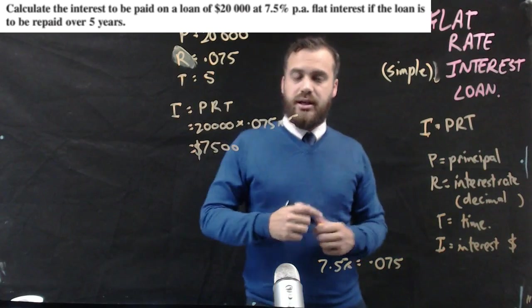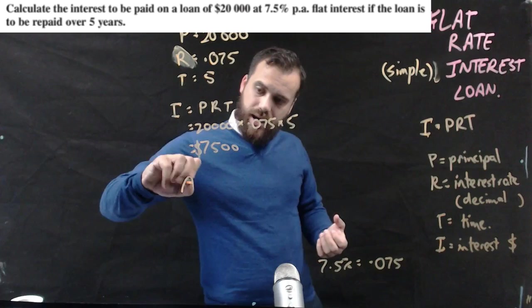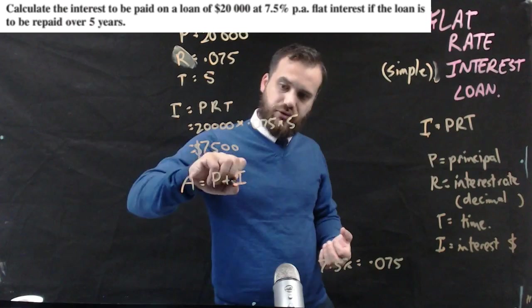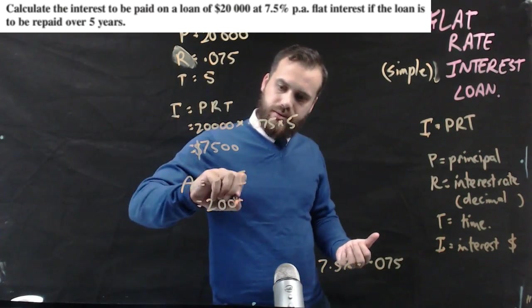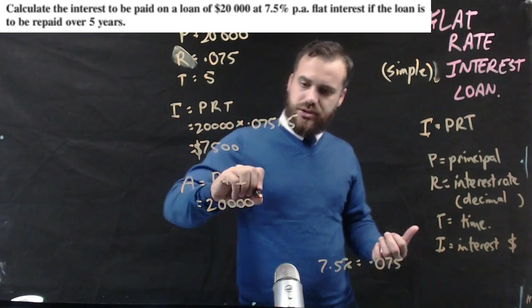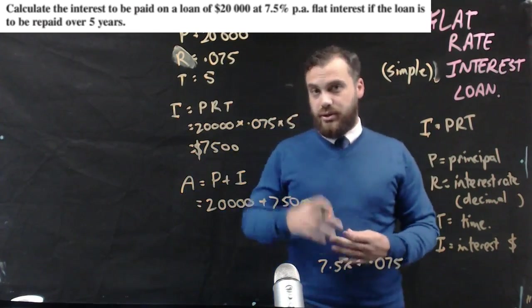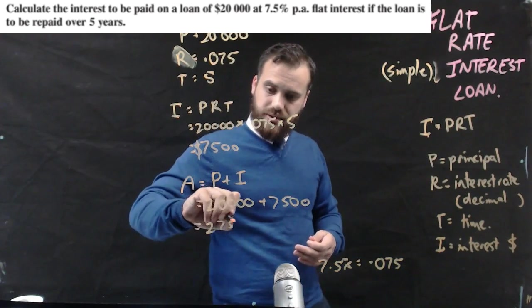Okay so if we want to find out how much you actually have to pay back, the total amount is equal to the principal plus the interest that we pay. So the principal is 20 grand. The interest is $7,500. So the total amount that I have to pay back on this is $27,500.